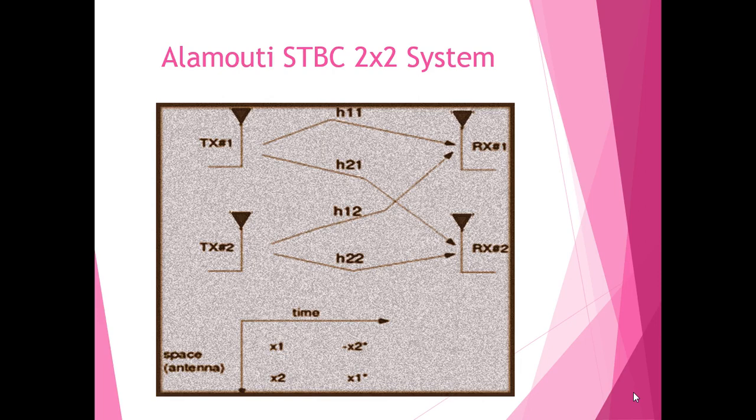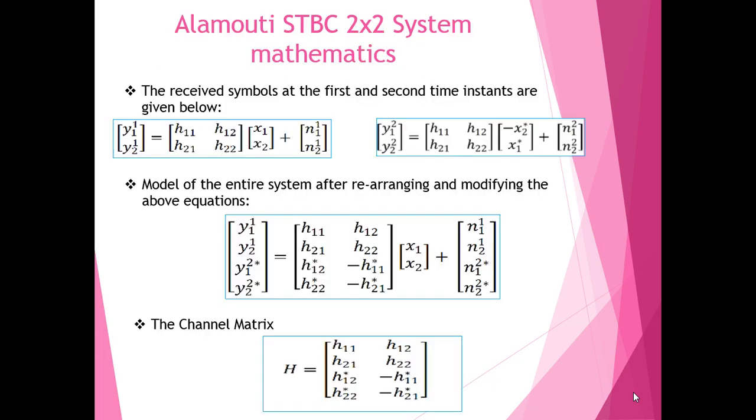Coming to Alamouti STBC for 2x2 system. Here, Alamouti scheme has been applied to two transmitters and two receiver systems. In time instant 1, Y1,1 and Y2,1 are received at receiver 1 and receiver 2 respectively. X1 and X2 are the transmitted symbols from transmitter 1 and 2 respectively. These are multiplied with the channel matrix. N1,1 and N2,1 are the noise powers at receivers 1 and 2 respectively at time instant 1.